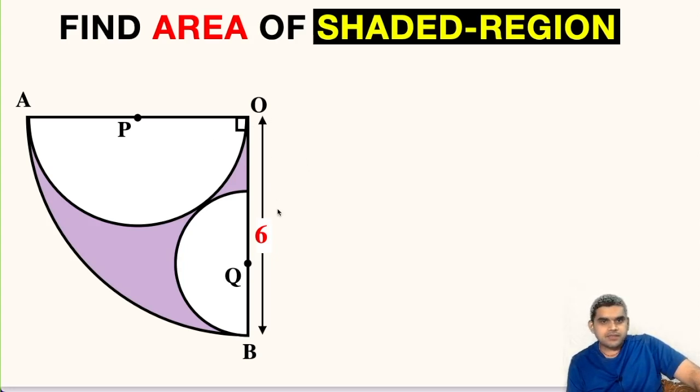As you can see in this figure, first we have a quarter circle, then a big semicircle and then a small semicircle. This is the common point of contact. Now this quarter circle has a radius of 6 units which is given to us and we have to find the area of this shaded region.